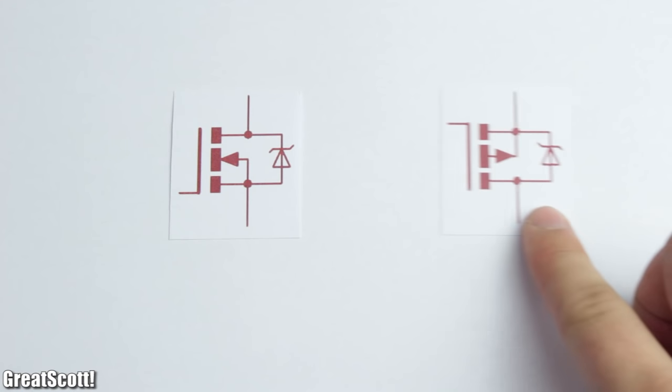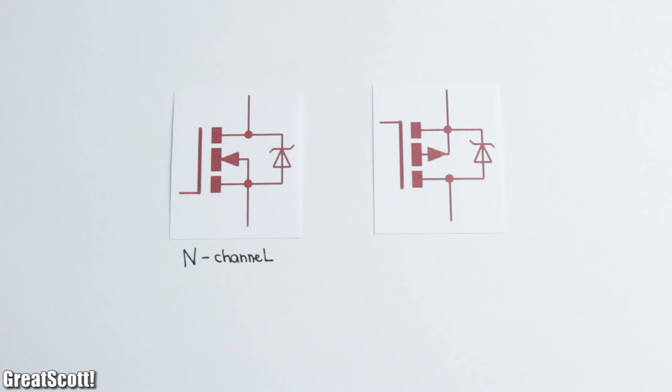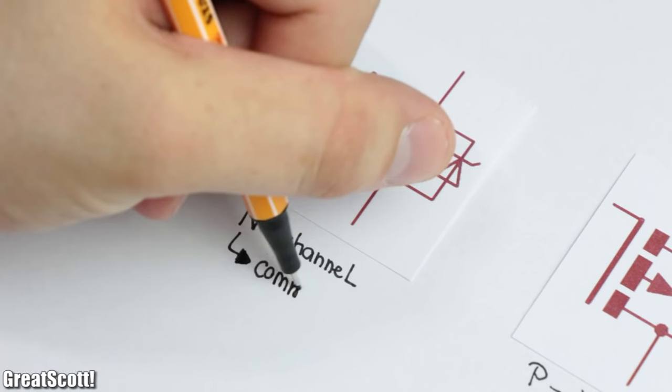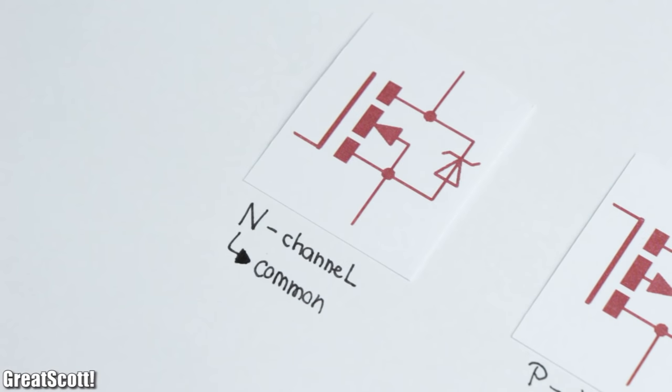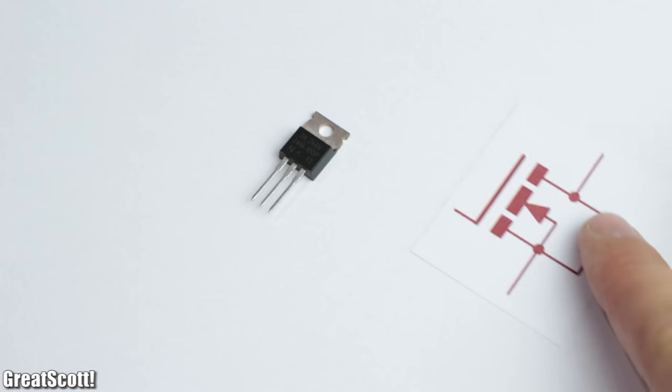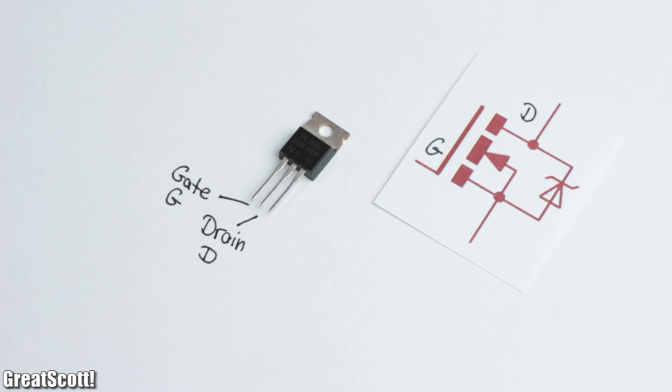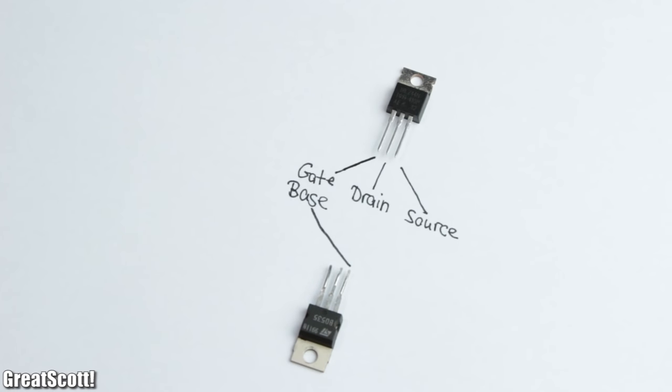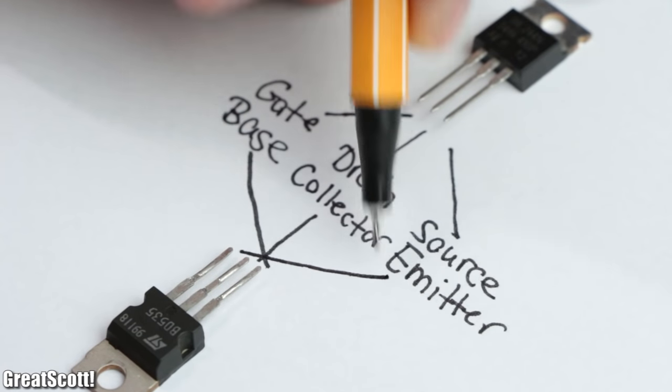There exists two types of MOSFETs: N-channel ones and P-channel ones. But more commonly used are N-channel types like this IRLZ44N, which has three pins called gate, drain, and source—the equivalent to the base, collector, and emitter of a BJT.